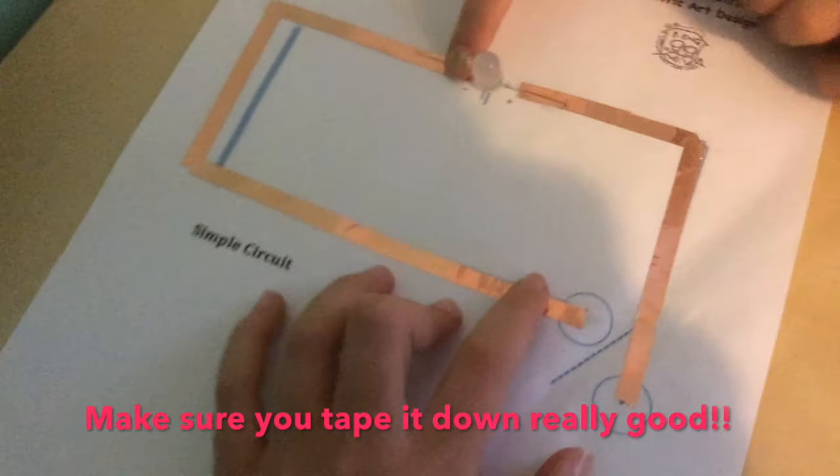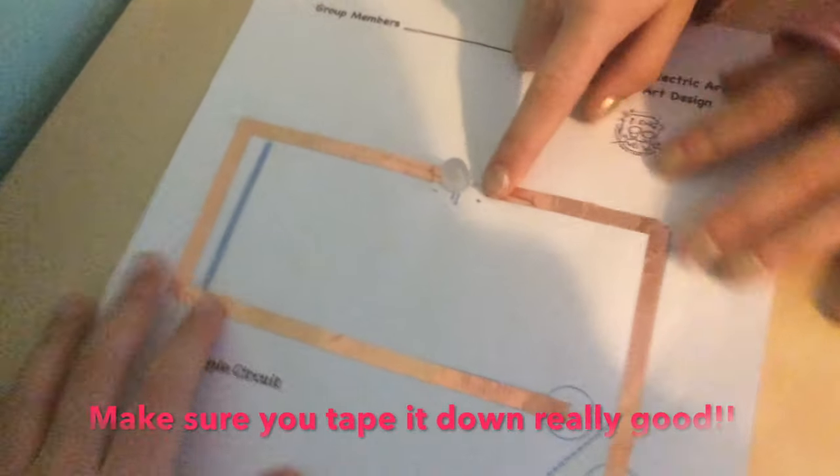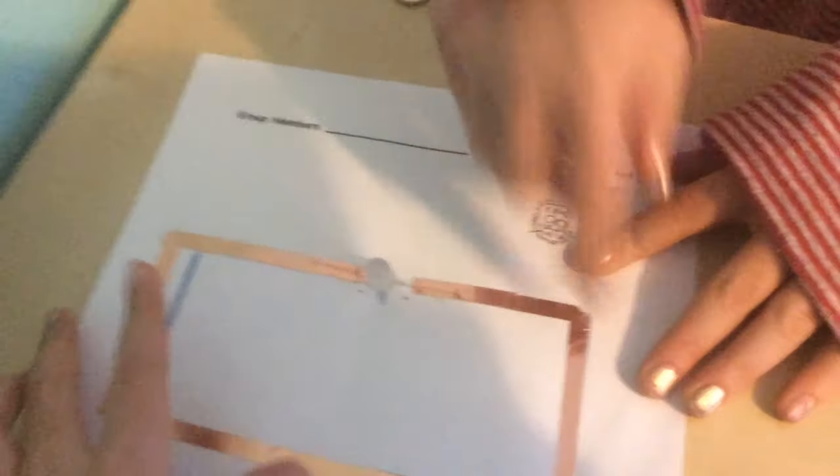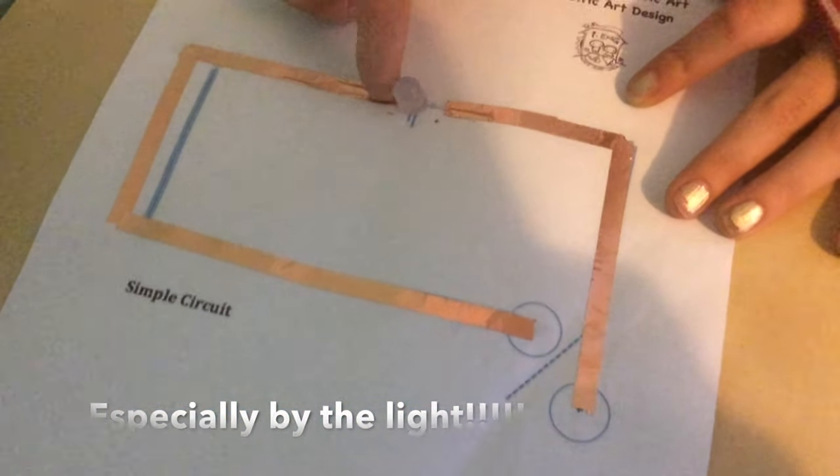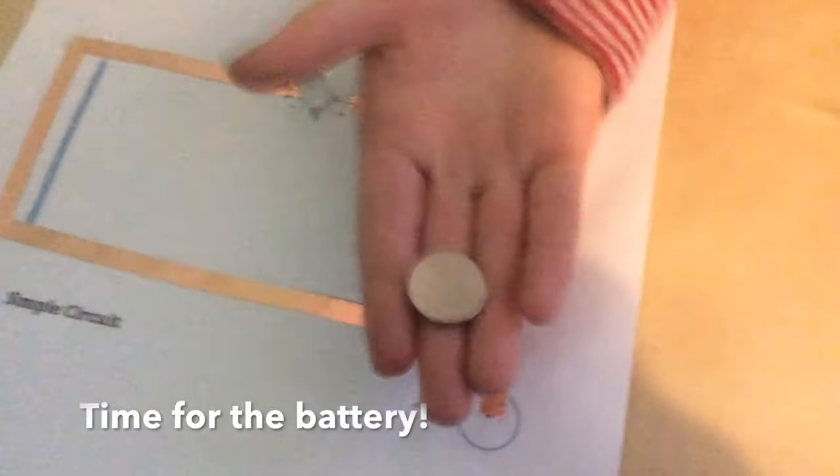Okay, so after you're done with that, you want to make sure that these are all smoothed down. Every side, especially right by the light. And then the next thing you're going to have to do is put your battery here.